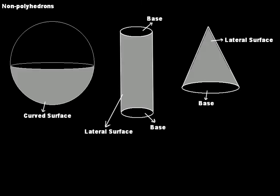Now let's look at some 3D objects that are not polyhedrons. The first is a sphere — like a football. If you slice it and hold one portion, you are holding a curved surface. A sphere is not made up of polygons — you cannot find a single polygon on it — and that makes it a non-polyhedron.